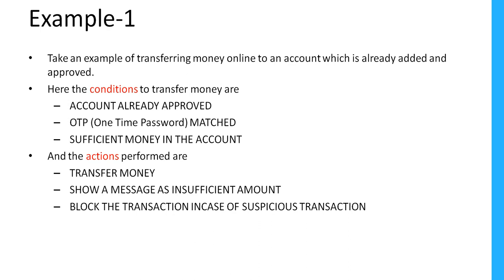Now let's see a few examples on the decision table. Example one: transferring money online to an account which is already added and approved. For this transaction we have a few conditions. The first condition is the account should already be approved. Second, the OTP (one time password) should be matched. Third, there should be sufficient money in the account.